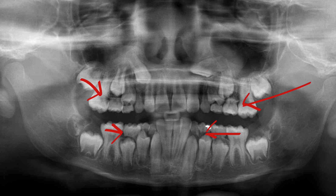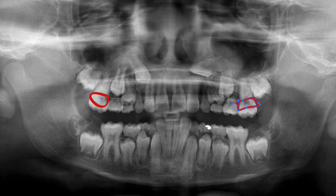To prevent the teeth from drifting mesially and creating more crowding, on the upper arch we could use a TPA — a transpalatal arch — which hooks onto bands on the upper six-year molars, goes across the palate, and holds those molars back so they're no longer able to mesialize, stopping further crowding.